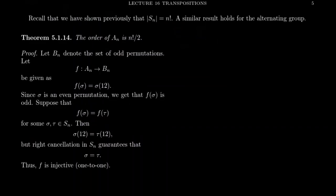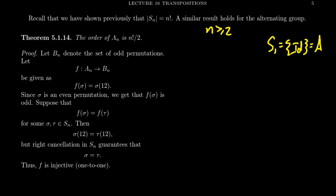How big is the alternating group? Recall that we've proven previously that the size of S_n is n factorial. We will see that, with the exception of n equals one — when S_1 is just the trivial group equal to the identity, which equals A_1, so there's no distinction — for n greater than or equal to two, we're going to show that half of the symmetric group is even. Thus, the alternating group has order n factorial divided by two.